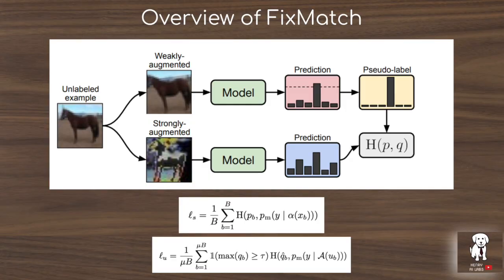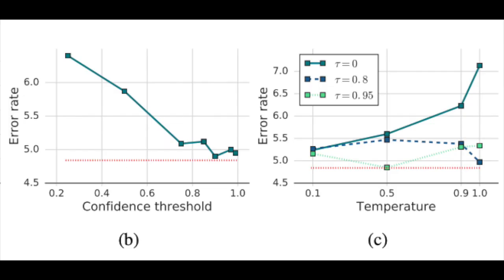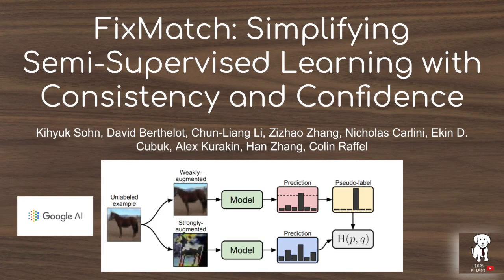This video will explain the details of FixMatch, such as the use of enforcing consistent predictions between weakly and strongly augmented unlabeled images. This paper is also really great because it shows an extensive ablation study showing the importance of hyperparameter tuning — this kind of AutoML with this algorithm. Different factors like the choice of optimizer, weight decay, and the size of the unlabeled dataset relative to the labeled dataset can have a massive impact on the resulting success of FixMatch.